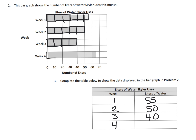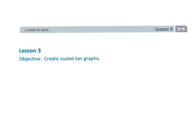And the last one — week four — has a little half box at the end, so that's ten, twenty, thirty, forty, fifty, sixty, plus that half box making it 65. Week four is 65 liters.